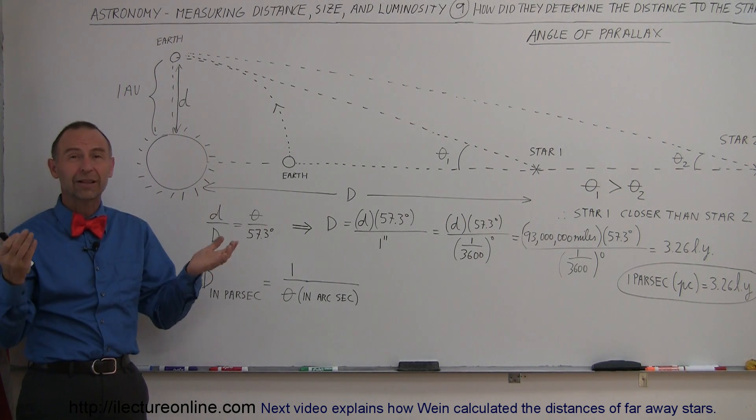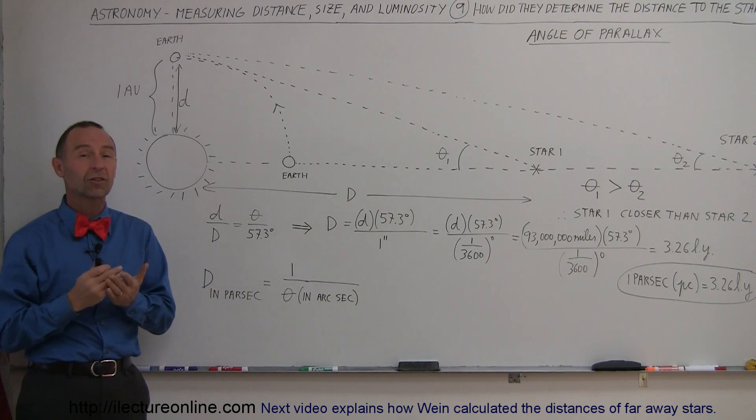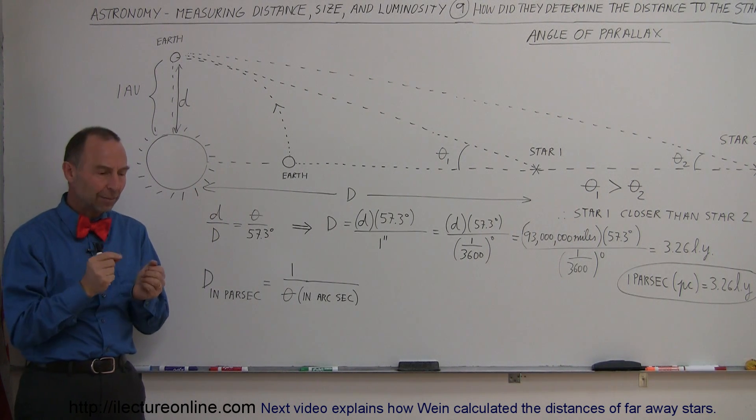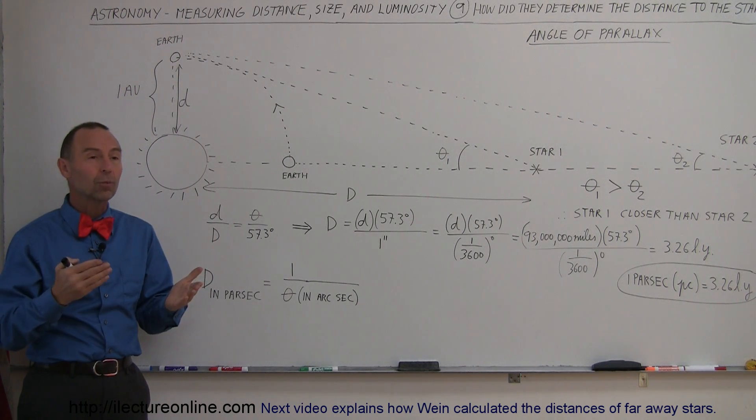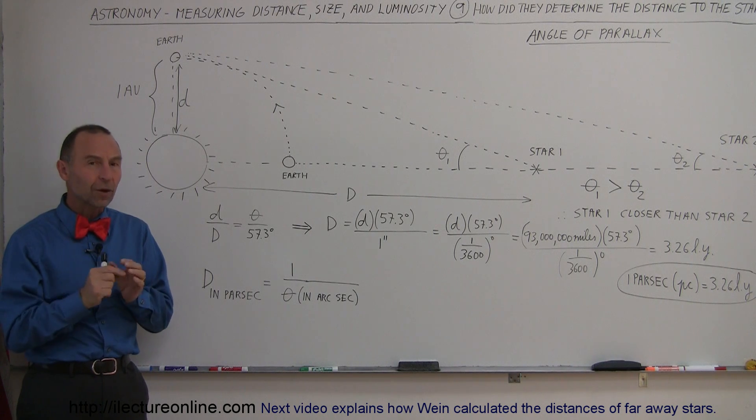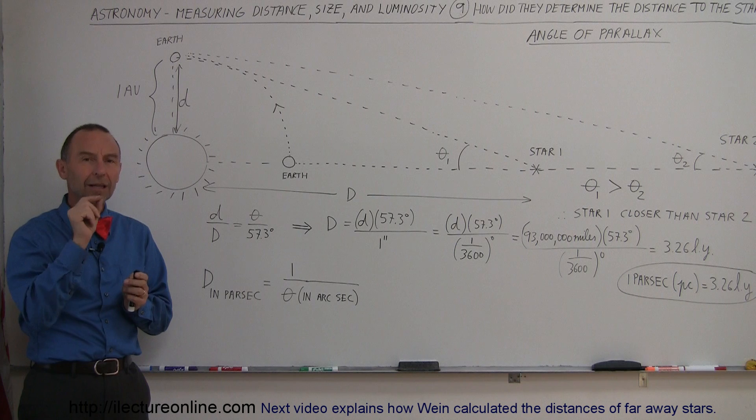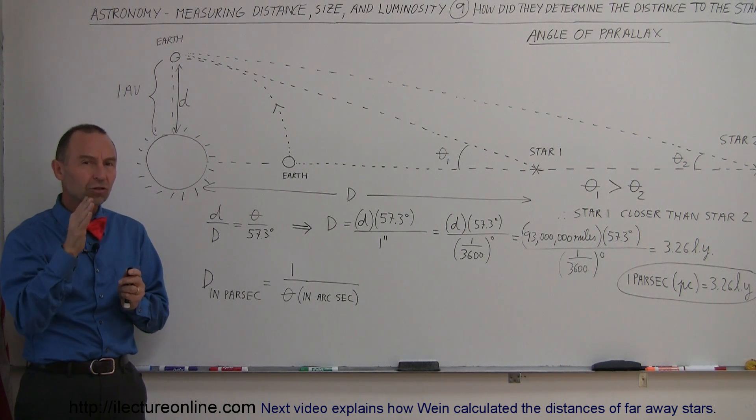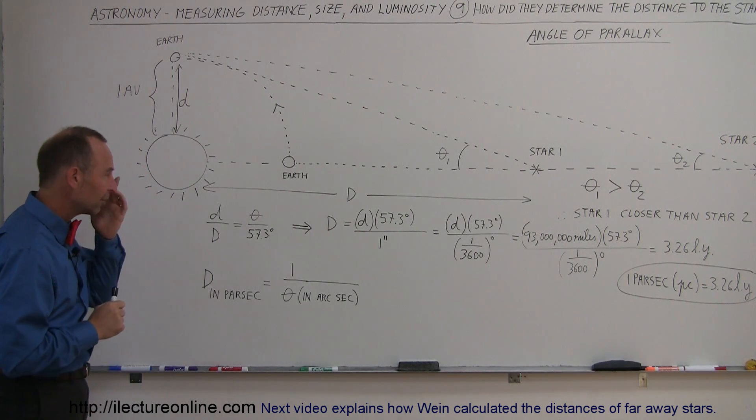But how do you figure out the distance of things when you don't know what they are and they seem to be motionless in the sky? Well, it turned out as they began to come up with better, bigger telescopes and started looking at the brightest of the stars, some of them actually showed that they moved a little bit in position relative to the other stars at different times of the year. Let me explain what that is.